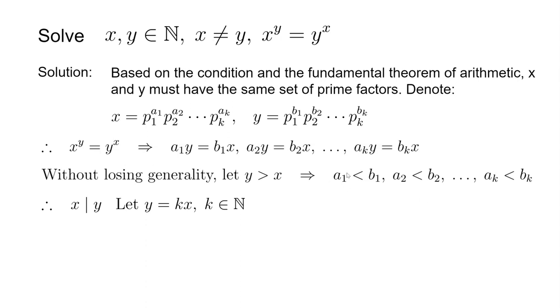If we plug those back into the definition of x and y, we notice that y divided by x can be expressed by p1 to the degree of b1 minus a1, p2 to the degree of b2 minus a2, all the way to pk to the degree of bk minus ak. Because all ai is less than bi, the index for each pi is larger than zero.